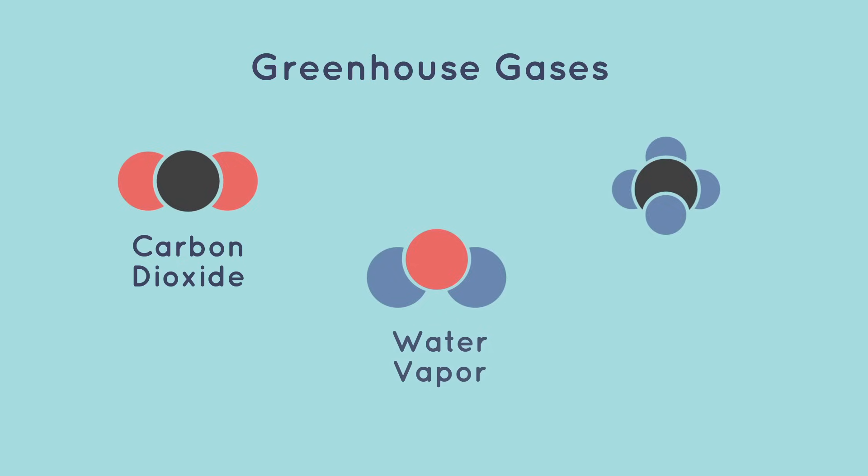Carbon dioxide, water vapor, and methane are all examples of greenhouse gases. Earth needs a balance of greenhouse gases to maintain just the right temperature for living things.